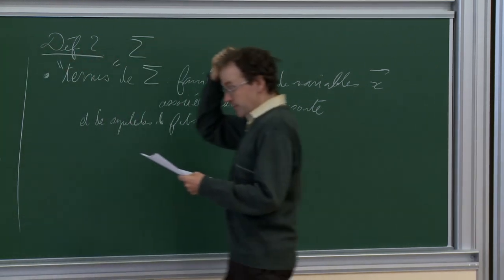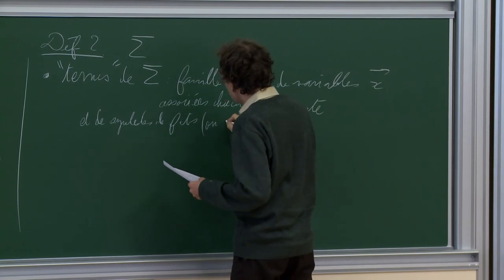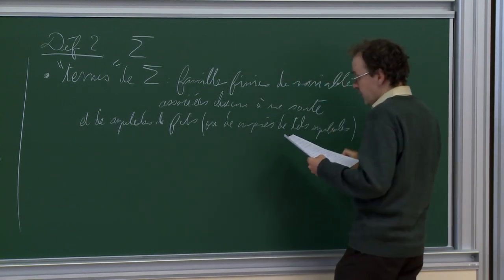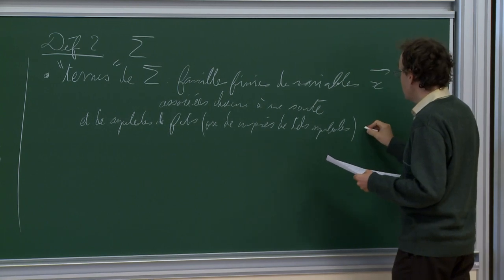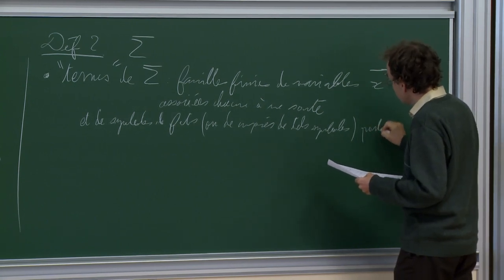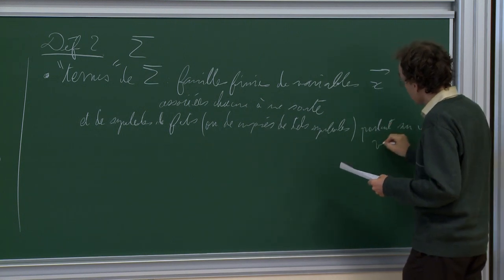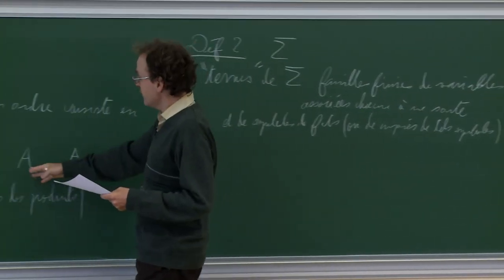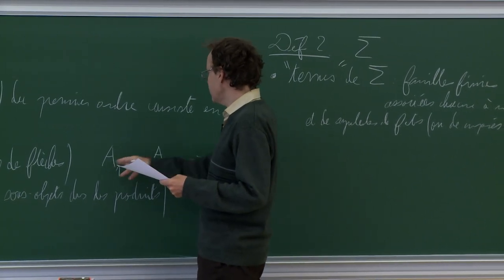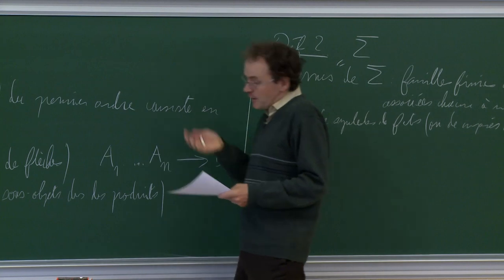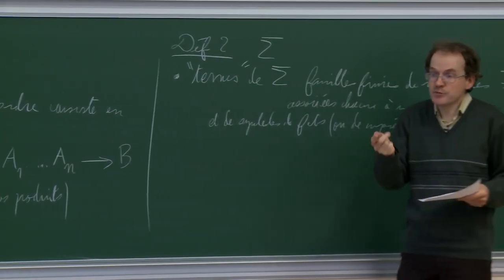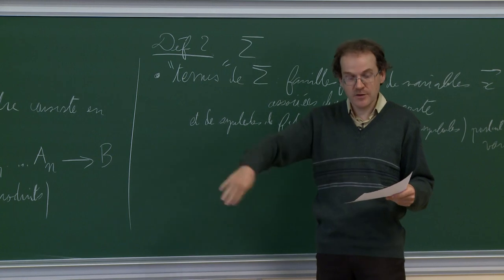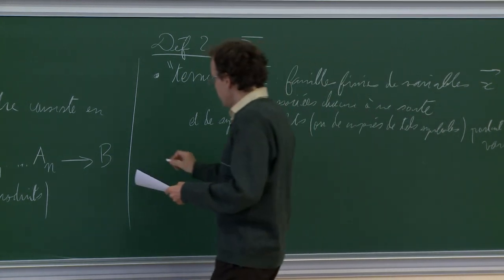The terms consist of finite families of variables associated each to a sort, together with symbols of functions. One may compose a type of symbol, because we have the right to substitute, bearing on these variables. For example, if you have a function symbol f and variables x1 to xn with the sorts associated to 1 through n, you can form the term f(x1,...,xn), and then replace one of the xi by a function with value in the sort associated with that variable.